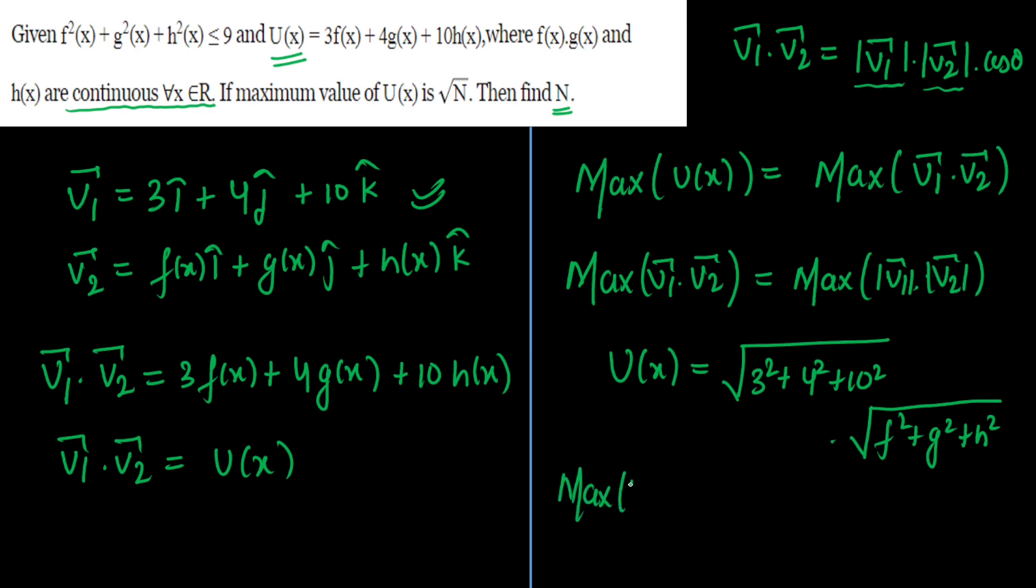So maximum of u(x) will be equal to √(9 + 16 + 100) which is √125, and we have to find the maximum of √(f² + g² + h²). It's given in the question that f² + g² + h² is always less than equal to 9, its maximum value is 9, so √9. If you multiply √125 with √9, you will get √1125. So our maximum value of u(x) is √1125.